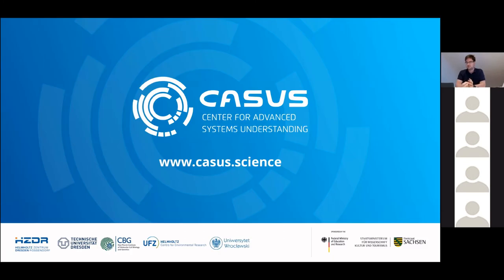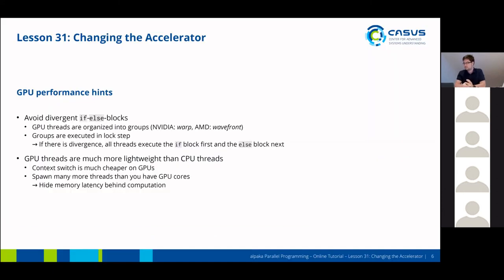Question: concerning the if-blocks — if all threads have the same true or false value for the condition, then there is no issue with if-else, right? The problem is when you have divergence within the same warp, meaning some threads followed the if-block and others followed the else-block — then both parts will execute for all threads. To clarify: they will execute in terms of runtime, but logically the code will be correct. It's a performance issue, not a correctness issue. The threads are masked out so they don't write anything to memory, but they still have to run through the block internally.